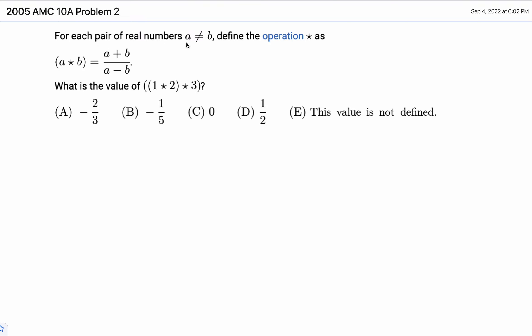For each pair of real numbers, where a is not equal to b, define the operation star as (a + b) over (a - b). What is the value of this?